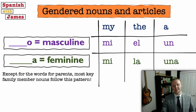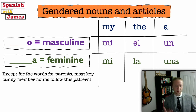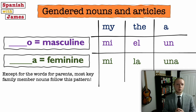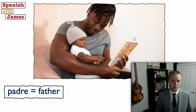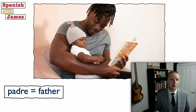Except for the words for parents, most key family member nouns follow this pattern of O or A ending. It's really nice — in English 'brother' and 'sister' are very different words, but in Spanish it's pretty much the same word; we just change the O for brother to an A for sister. So let's jump in with our first family member. Padre means father. A father would be un padre, the father el padre, my father mi padre.